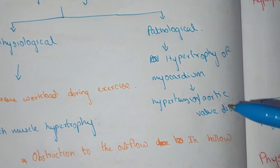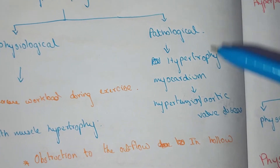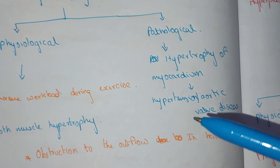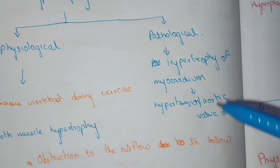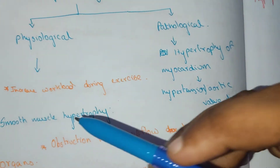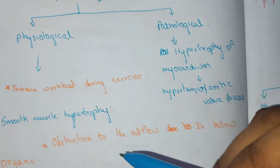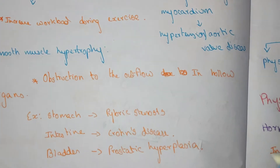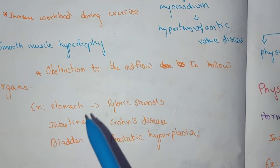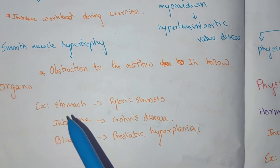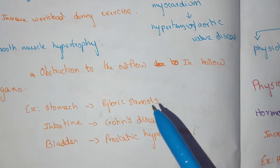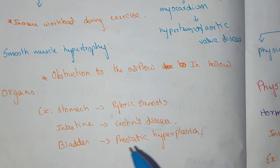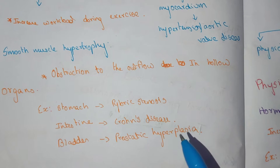Pathological hypertrophy of the myocardium occurs in hypertension and aortic valve disease. Smooth muscle hypertrophy occurs due to obstruction of outflow in hollow organs — for example, pyloric stenosis, Crohn's disease of the intestine, and bladder hypertrophy due to prostatic hyperplasia.